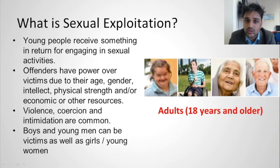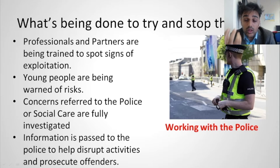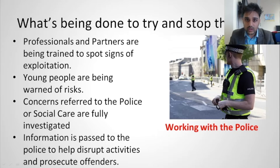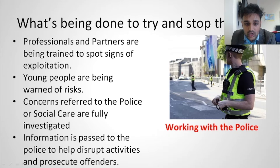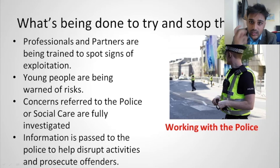Boys and young men can be victims as well as girls and young women. What's being done to try and stop this? Professionals and partners are being trained to spot signs of exploitation — this video is exactly that. Young people are also being warned through education programs. Concerns referred to the police or social care are fully investigated, and information is passed to the police to help disrupt activities and prosecute offenders. Working with the police is very important to stop these crimes.